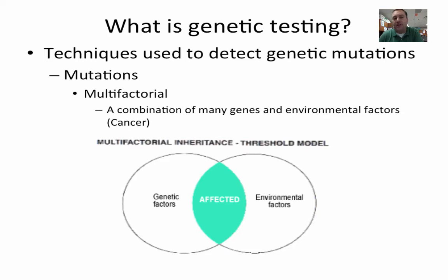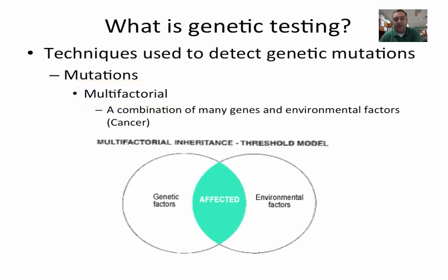Another type of mutation is multifactorial — a situation where not only is there a genetic component, but also an environmental component. In this Venn diagram, genetic factors interact with environmental factors like diet, environmental toxins, and pollution, and the combination could cause you to be affected by the disease. This is how a lot of cancers work: you may be predisposed, but it requires an environmental factor to trigger it.